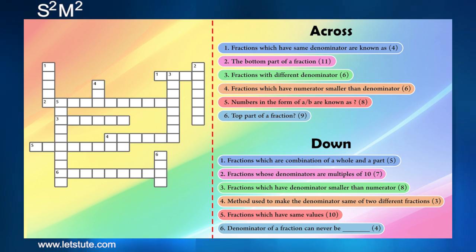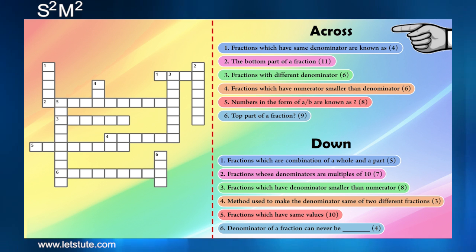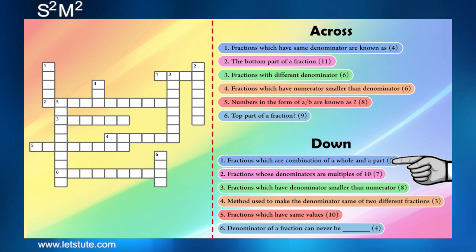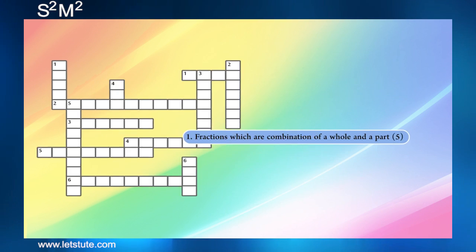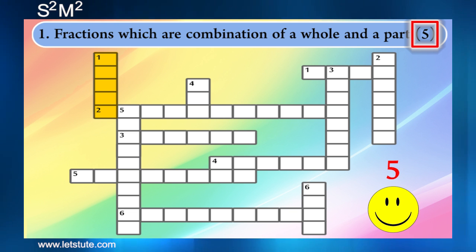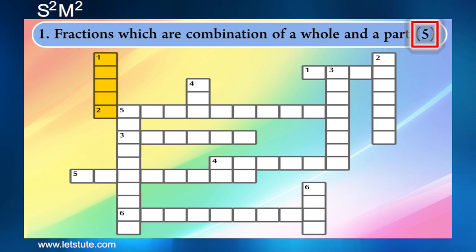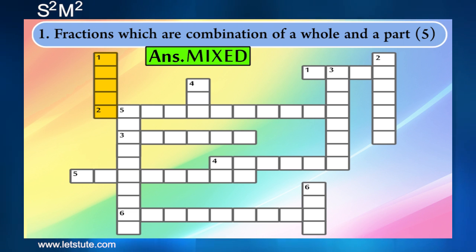So as we all know, a crossword can be started from anywhere you want. So let me start with the first question in down. Fractions which are a combination of a whole and a part, and the answer is of five words. Can you guess it? Yes, the answer is mixed fractions.